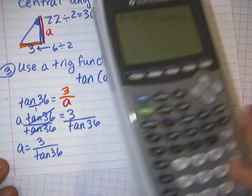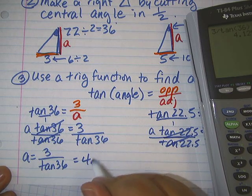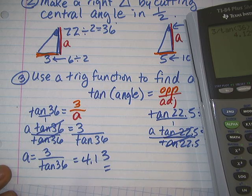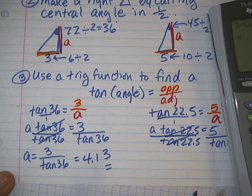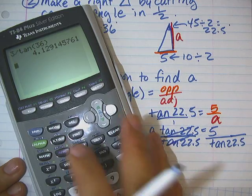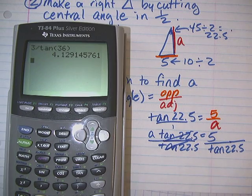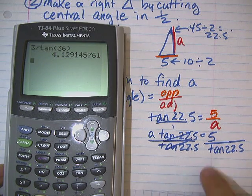So, then, this next one, A is 5 divided by tangent of 22.5. How much is that in my calculator? 5 divided by tan 22.5. Enter. 12.07. If I wanted to go to the thousandths, 12.071. 12 and 71 thousandths.